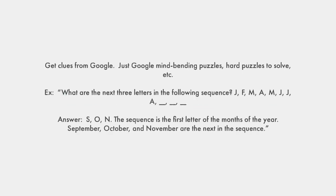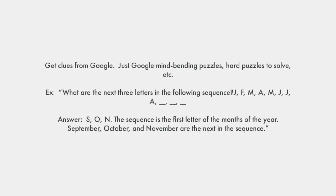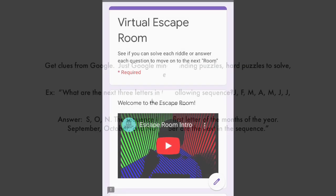Now let's look at some game question ideas. Google has different questions you can use — try searching 'mind bending puzzles' or 'hard puzzles to solve.' For example, I found this one: it says, 'What are the next three letters in the following sequence?' and gives you J F M A M J J A with three blanks. The answer is S O N — the sequence is the first letter of each month of the year, and September, October, and November are next.